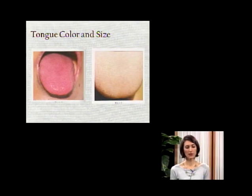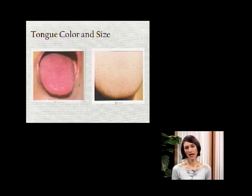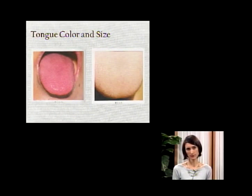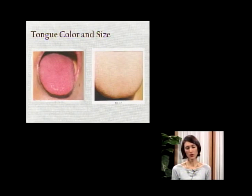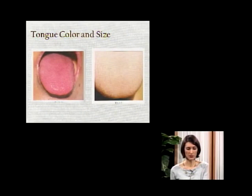On the other hand, if we look at the enlarged pale tongue on the other side of the screen, we may say that this person has deficiency of kidney yang. It is cold because it is pale, and since it is quite enlarged we may think they have some kind of kidney deficiency. These are two aspects of the tongue that we look at.